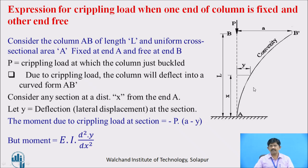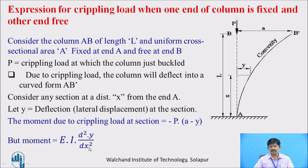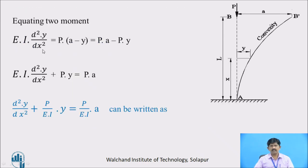The moment due to the crippling load: the crippling load acts at the deflected point, so the load times the distance gives the moment, which is P into (A minus Y). This moment is also given by the formula EI d²y/dx². Equating both moments, we get EI d²y/dx² equals P into (A minus Y).